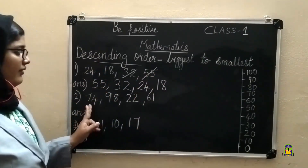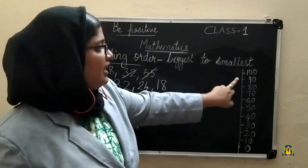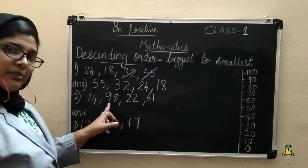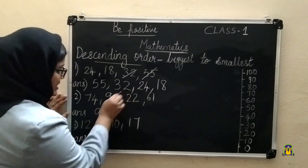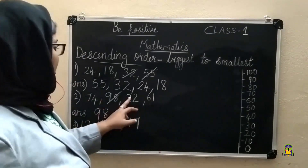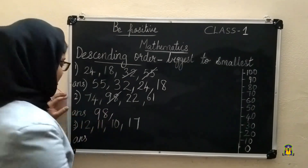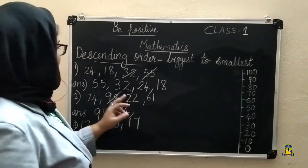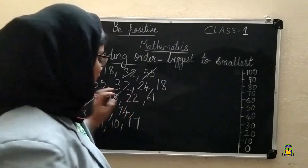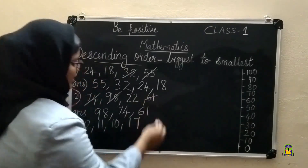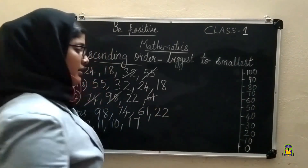Second descending example: 74, 98, 22, 61. Checking the range 100 to 90 — yes, 98 is there. So the first largest number is 98. From the remaining 22, 74, 61, the largest is 74. Then from 22 and 61, the largest is 61. The remaining number is 22. So the descending order is 98, 74, 61, 22.